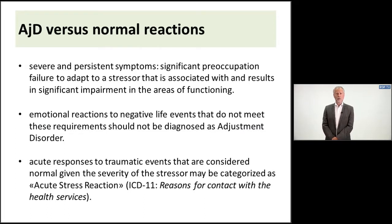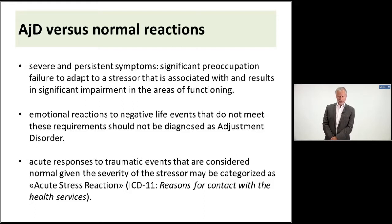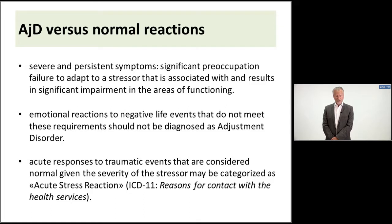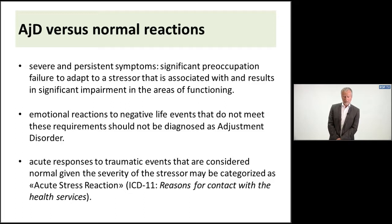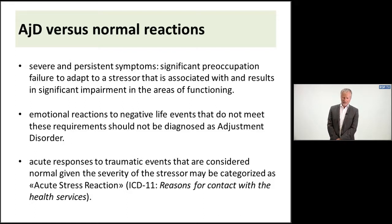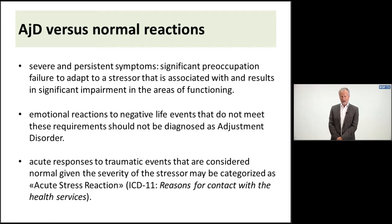As I mentioned already, it's important to distinguish adjustment disorder versus normal reactions. How can one do it? Look at the persistence and severity of the symptoms. If there are significant preoccupations and failure to adapt to a stressor, then it is adjustment disorder. If these are emotional reactions to negative life events that do not meet these requirements, they should not be diagnosed as adjustment disorder. An acute response to traumatic events that is considered normal, given the severity of the stressor, may be categorized as acute stress reaction, which is a category in an additional chapter of ICD-11 in the chapter of reasons for contact with health services.